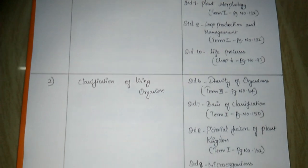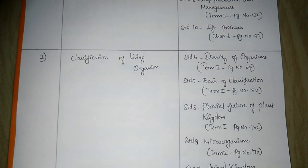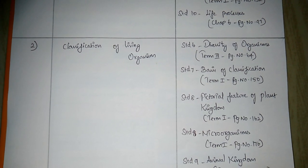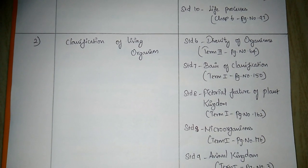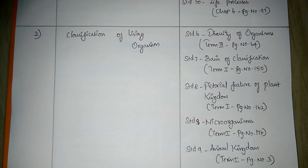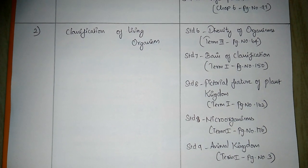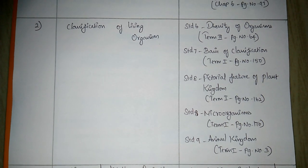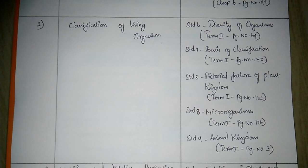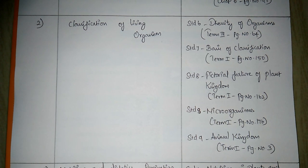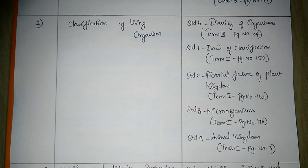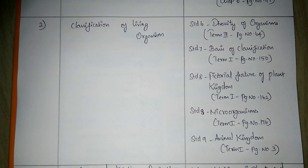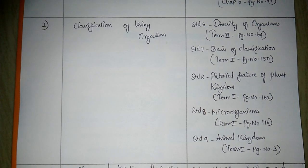Next, the second topic is classification of living organisms. Standard 6, diversity of organisms, Term 3, page 64. Standard 7, basis of classification, Term 1, page 150. Standard 8, pictorial feature of plant kingdom, Term 1, page 162. Standard 8, microorganisms, Term 1, page 176. Standard 9, animal kingdom, Term 1, page 3.